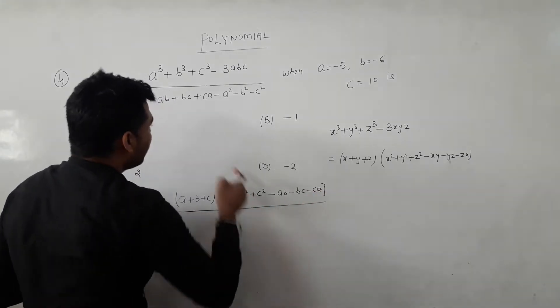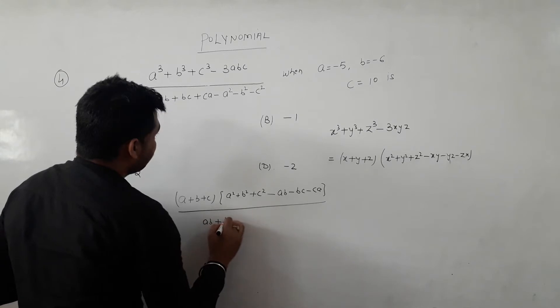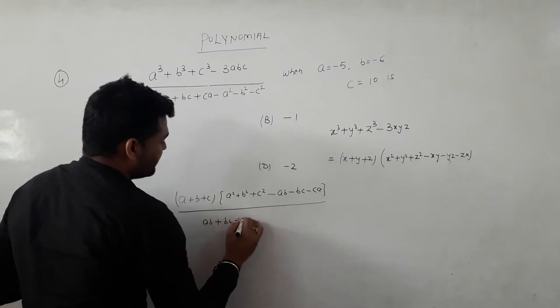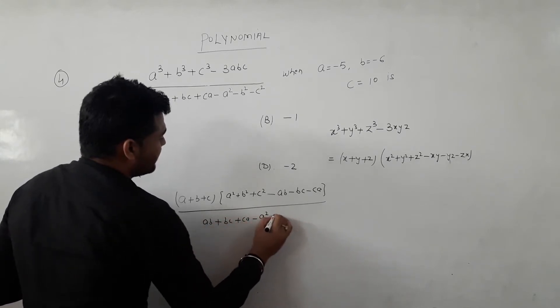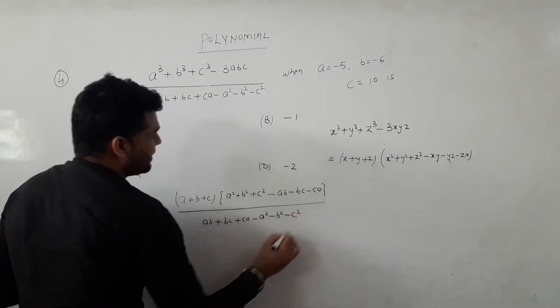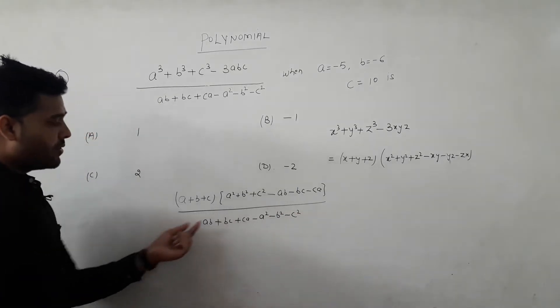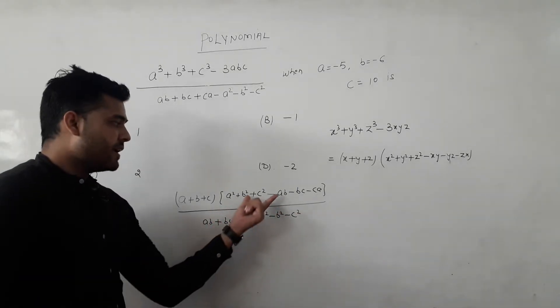Upon ab plus bc plus ca minus a² minus b² minus c². So these cancel out.